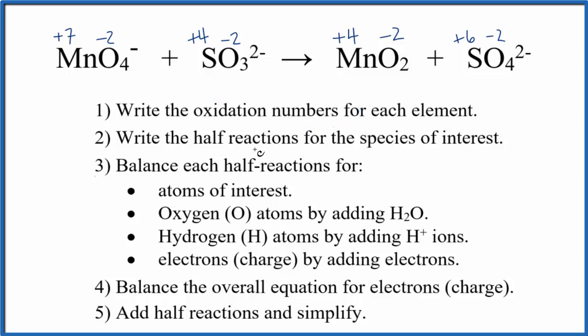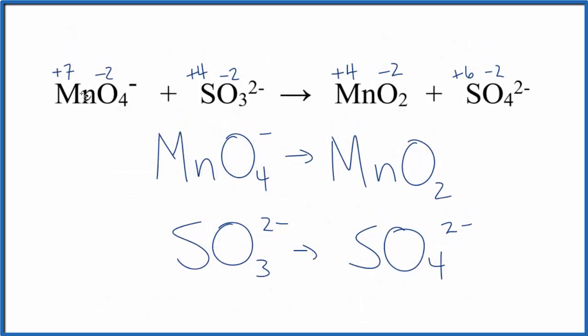Next after we have those oxidation numbers we can write the half reactions for the species of interest. Those are the ones that have changed their oxidation numbers. That'll look like this. So the manganese goes from plus 7 to plus 4. This is a smaller number so that would be our reduction reaction.